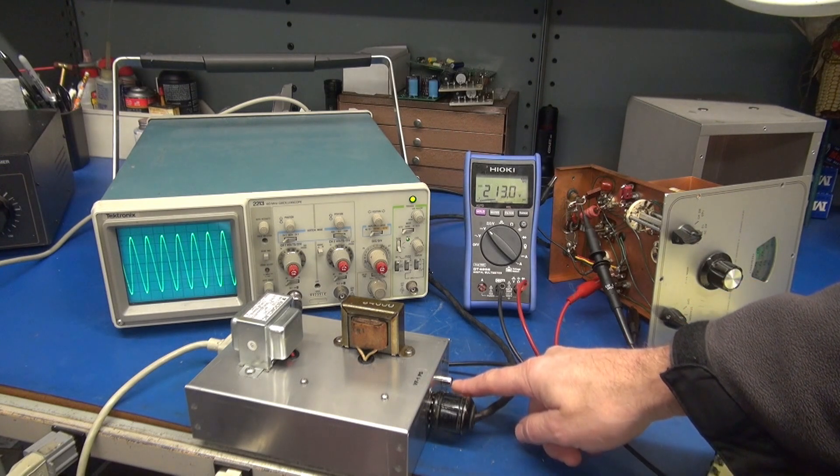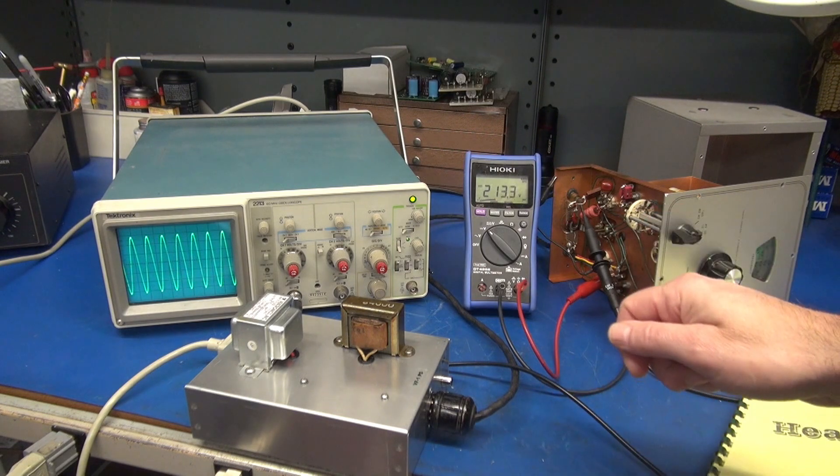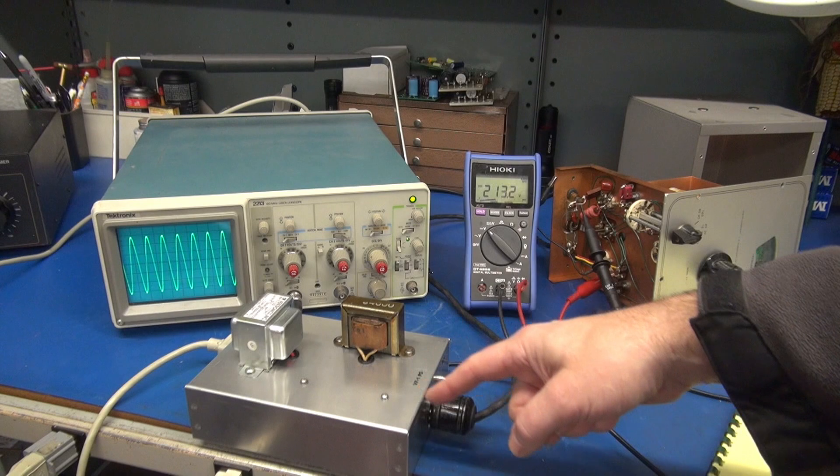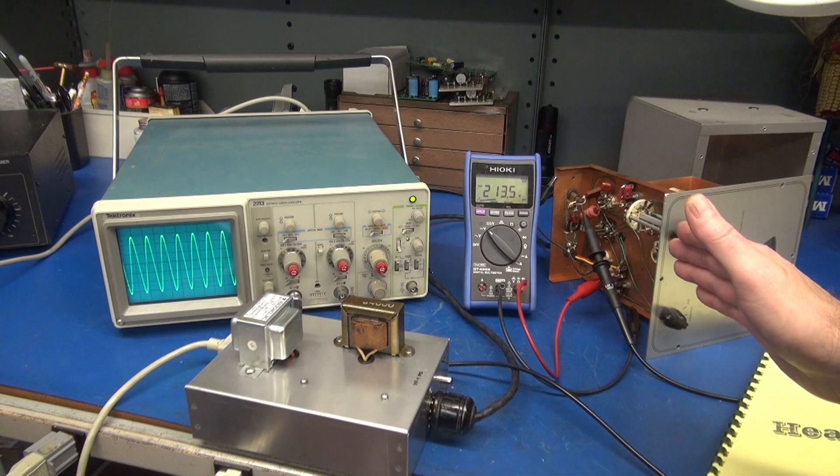There's also an RCA jack right here. That's your key line. So when you go into transmit mode, that goes in through the octoplug and tells the VFO it's time to operate.